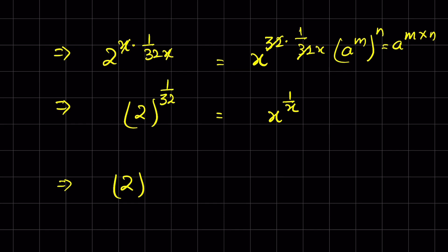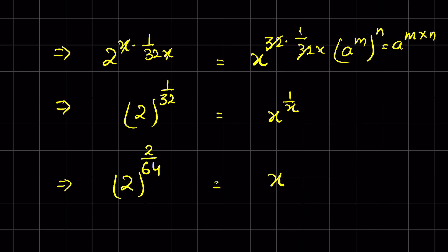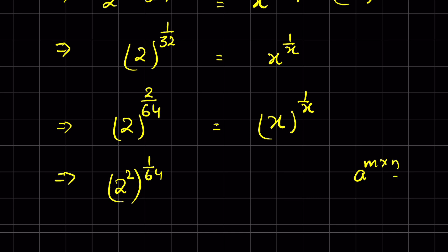Now 2 raised to the power 1 upon 32 — we can also write 1 upon 32 as 2 upon 64, since multiplying both numerator and denominator by 2 gives the equivalent fraction 2 upon 64. So we have 2 raised to the power 2 upon 64, equal to x raised to the power 1 upon x. This can also be written as 2 raised to the power 2, whole raised to the power 1 upon 64, using the rule that a raised to the power m times n equals a raised to the power m, whole raised to the power n.